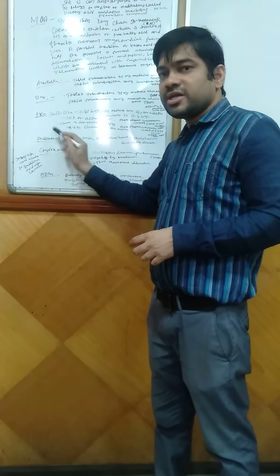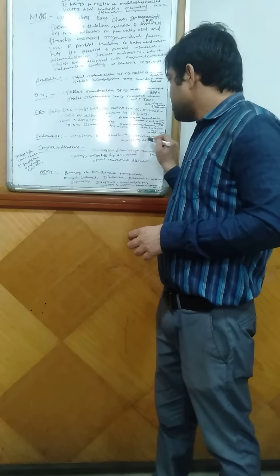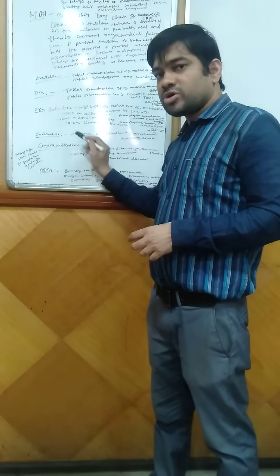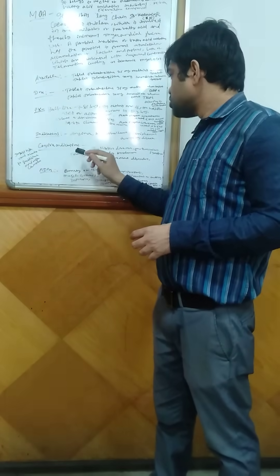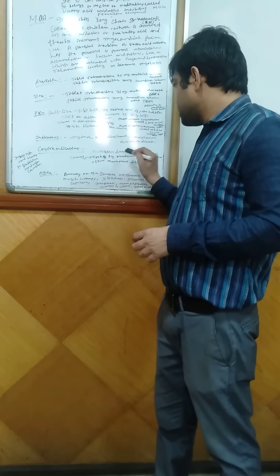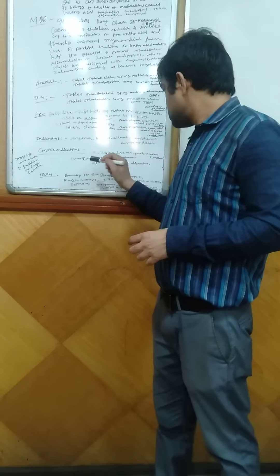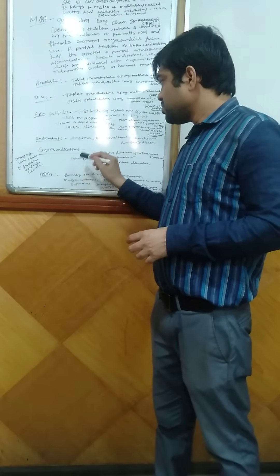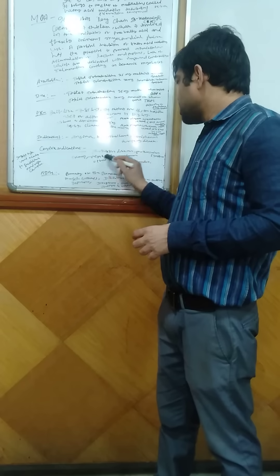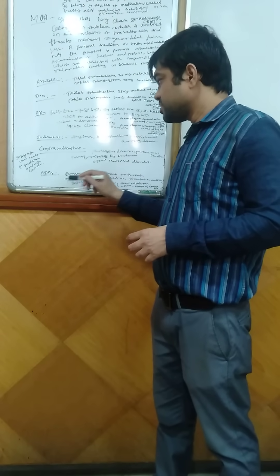Coming to the indications, it is indicated in cases of angina, angina pectoris, and peripheral arterial disease. Coming to the contraindications, this drug is contraindicated in Parkinson's disease, Parkinson's symptoms, tremors, restless leg syndrome, and other movement disorders. In those cases, we cannot use Trimetaghidine.